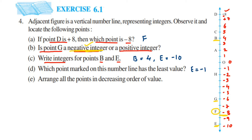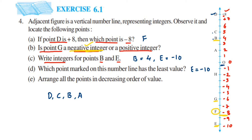The last question is: arrange all the points in decreasing order of value. Decreasing order means we write the greatest first and go towards the smallest. The greatest here is D, so we start with D, then C, then B, then A, then O which is at the center of the number line, then H, then G, then F, and the last one is E. This is the decreasing order of value.